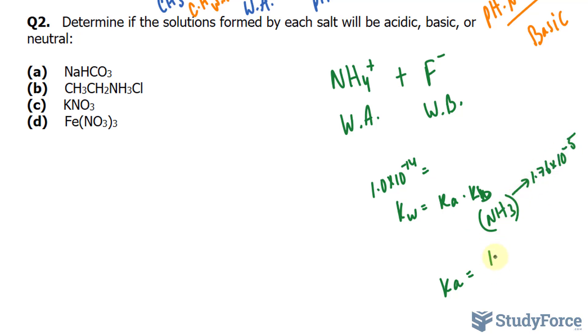So dividing both sides by this number, we have 1.0 times 10 to the power of negative 14 divided by 1.76 times 10 to the power of negative 5. This should give us 5.68, not taking into account significant figures, times 10 raised to the power of negative 10.